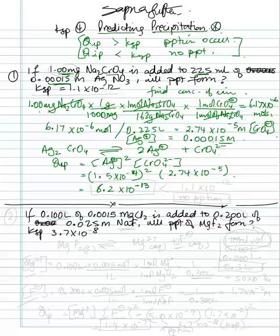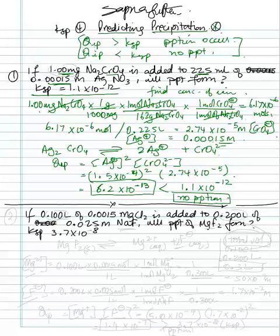So this is the QIP calculated, and the KSP is given right here: KSP is 1.1 times 10 to the negative 12. So QIP is less than KSP, so no precipitation. That's the final answer — no precipitation, because QIP was less. That's how you do this — calculate QIP as you would for KSP.